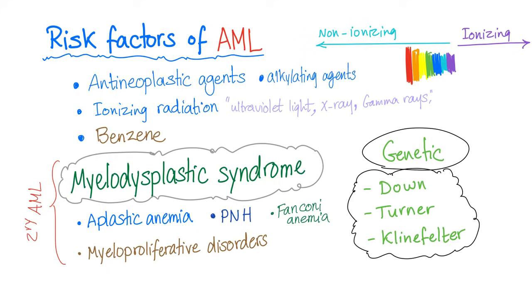Risk factors for AML include chemotherapy, alkylating agents, ionizing radiation, benzene exposure, myelodysplastic syndrome, aplastic anemia, PNH (paroxysmal nocturnal hemoglobinuria), Fanconi anemia, and myeloproliferative disorders. If AML occurs after any of these conditions, we call it secondary AML, and it carries a poor prognosis.